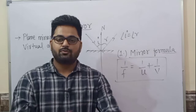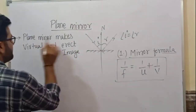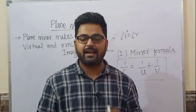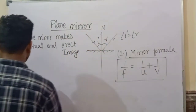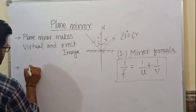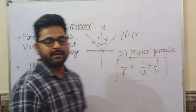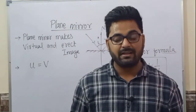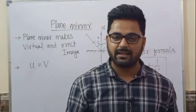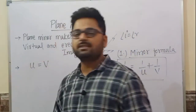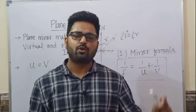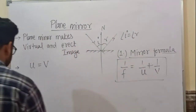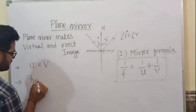Plane mirror makes a virtual and erect image — meaning after reflection, the rays appear to meet but do not actually meet. The second property is: u is always equal to v in the case of a plane mirror. It means the distance of the object is always equal to the distance of the image — the image is formed behind the mirror at the same distance.